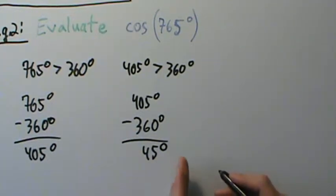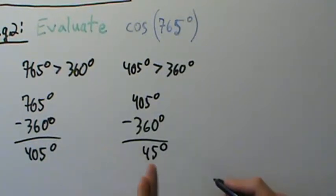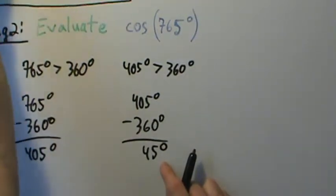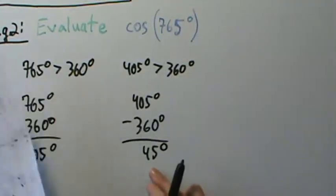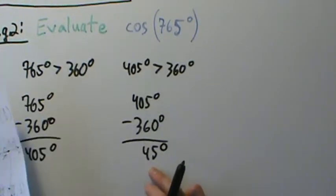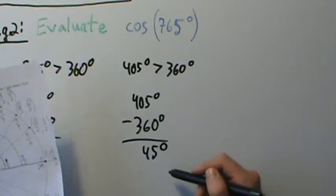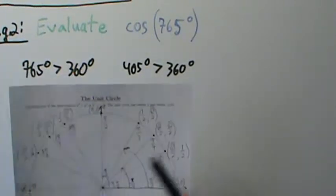Now we ask ourselves, is that a special angle on the unit circle? Yeah, it is, right? So 45 degrees, that's the same as π over 4 radians. So definitely know that. If you don't memorize that, just remember how to convert. So 45 degrees, multiply that by π over 180 to get to radians. So that will give you π over 4 radians.